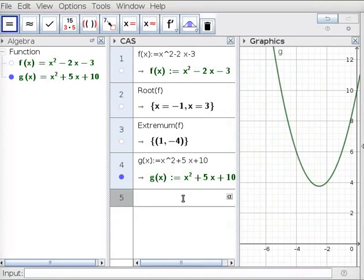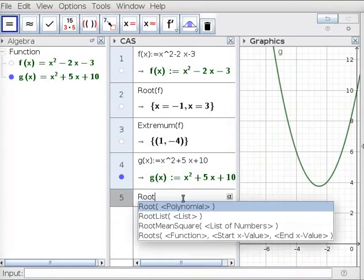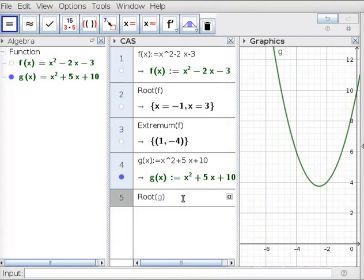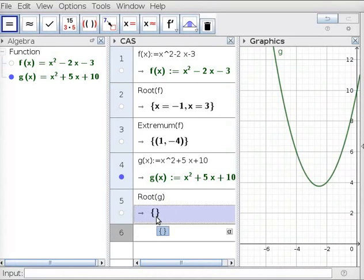In line 5 of CAS view, type root(g). Press Enter. Empty curly brackets appear below. Parabola g does not have any real roots as it does not intersect x-axis at all. Roots are said to be complex.